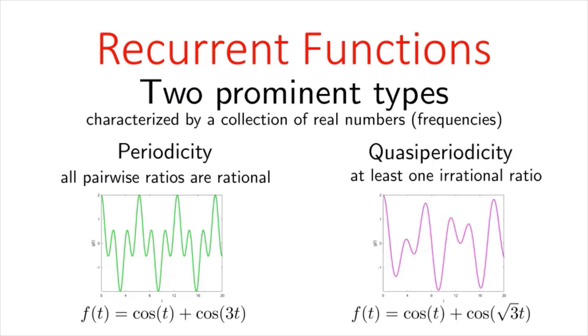But if at least one of the pairwise ratios of frequencies is irrational, we get something called quasi periodicity, for example, in the function cosine t plus cosine square root of three t.